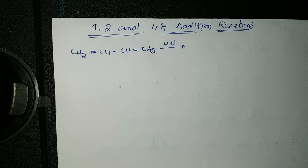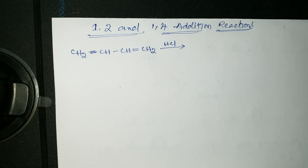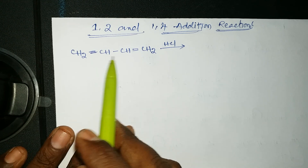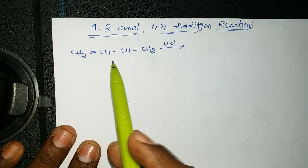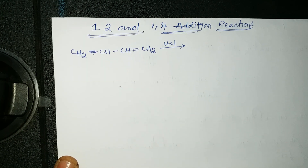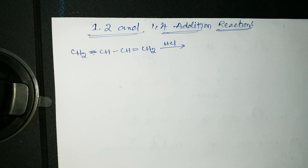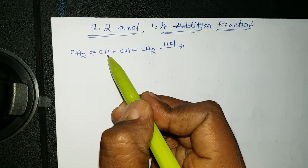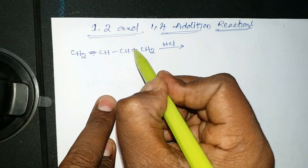The next topic is 1,2 and 1,4 addition reactions. In this equation, conjugation is present — conjugation means double bond, then single bond, then double bond — that is called conjugation: alternating double-single-double. In this equation, two types of products will form: one is the 1,2 addition reaction, and the other is the 1,4 addition reaction.